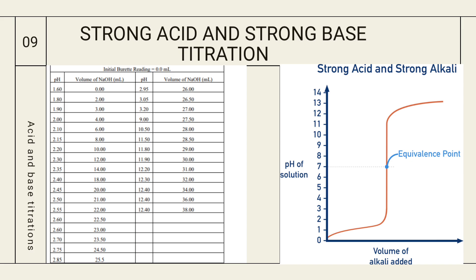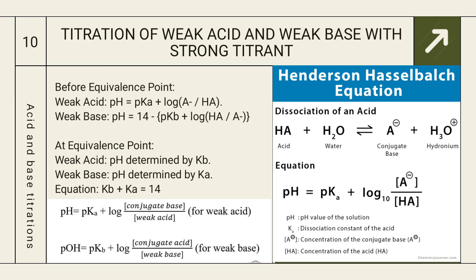For a weak acid, the initial pH is about 3.6 or 4 rather than 1.6, so we do not observe that sharp jump — the increase from pH 4 to 9 is not as dramatic. For weak acid and weak base titrations, we use the Henderson-Hasselbalch equation: pH = pKa + log([A⁻]/[HA]), where pKa is the acid dissociation constant. When acid reacts with water, it forms a conjugate base. We take the concentration of conjugate base over acid for weak acids.